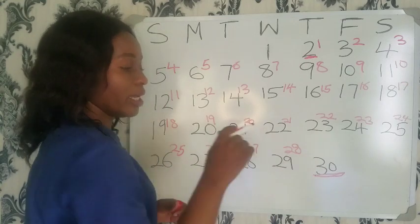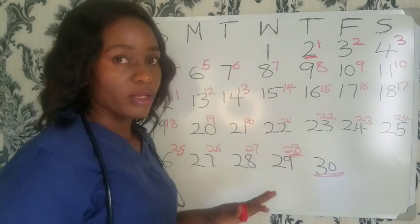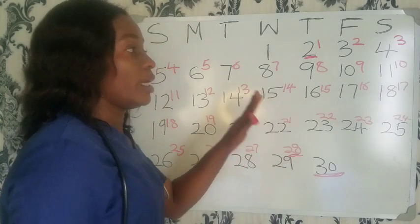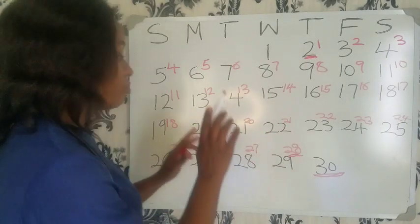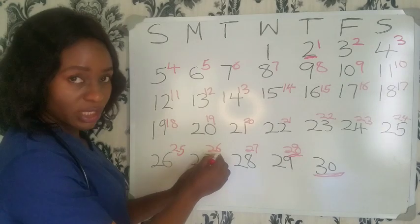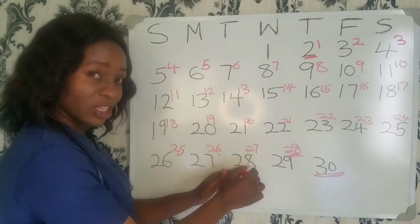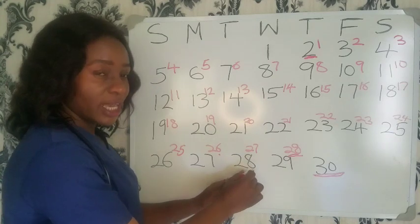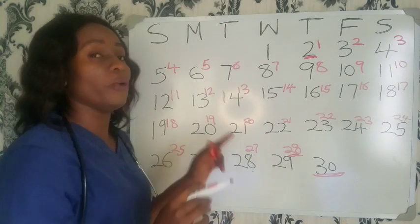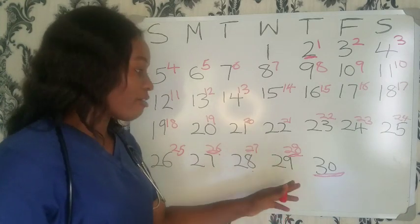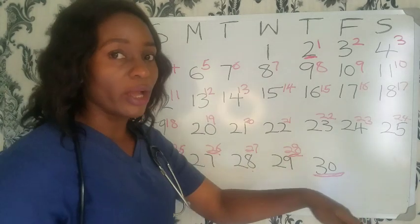If your next period starts on November 30th, it means you have a 28-day menstrual cycle. But it doesn't have to be 28 days — if after day 26 you started menstruating again on the 28th, it means you have a 26-day menstrual cycle. Most women have a 28-day cycle, but yours can be longer or shorter.